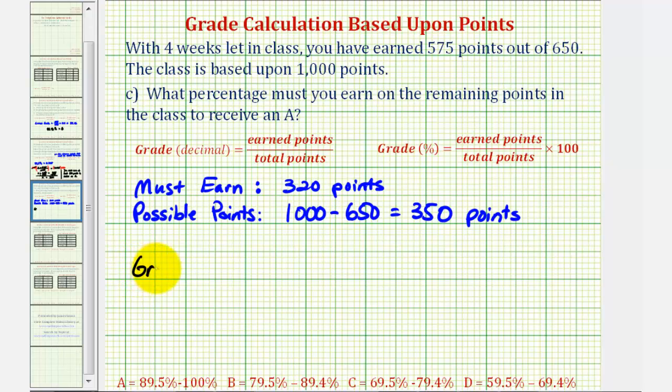So the grade for the remainder of the course must equal the points you must earn, 320 divided by the total points possible remaining, 350. This would give the grade as a decimal and then times 100 to convert to a percentage.